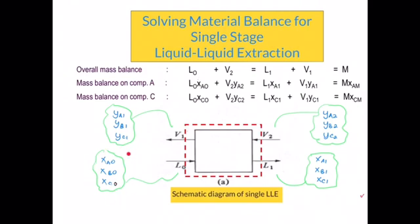The total value of the mass fractions must equal one. So if you add XA0 plus XB0 plus XC0, the answer should equal one. The same applies to all streams — when you add all mass fractions for any stream, you always get one. The symbols L1, V2, V1, and L0 represent the mass flow rates of each stream.